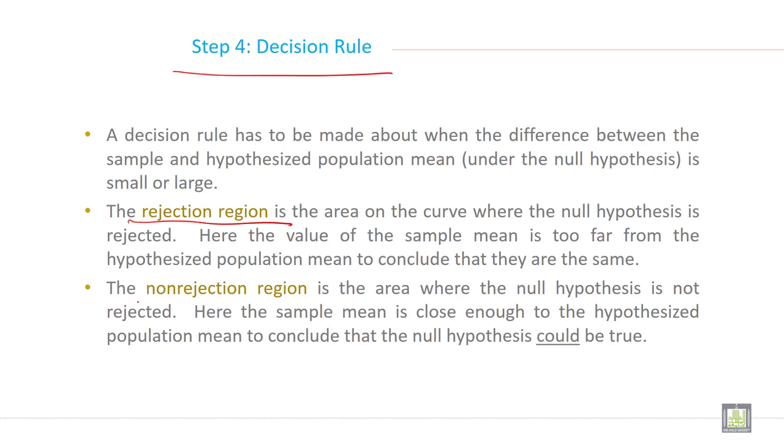The non-rejection region is the area where the null hypothesis is not rejected. Here the sample mean is close enough to the hypothesized population mean to conclude that the null hypothesis could be true.